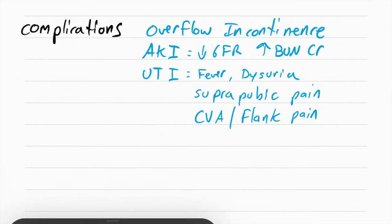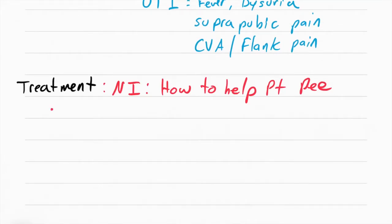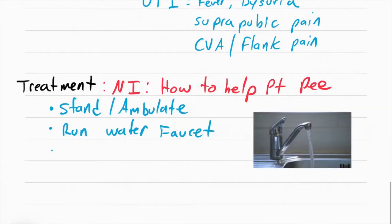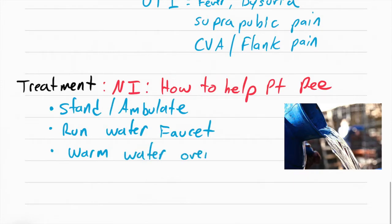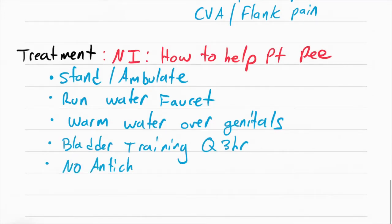How can we help the patient prevent this? How can we help them pee? A lot of the stuff that we can do are nursing interventions, not medications. We can have the patient stand up, we can have them ambulate, that really gets the urine going. We can run the water faucet so let the water run so they can hear it. We can pour warm water over their genitals. We can do bladder training, which means we have them go every three hours. We also want to avoid giving anticholinergics to patients with urinary retention.